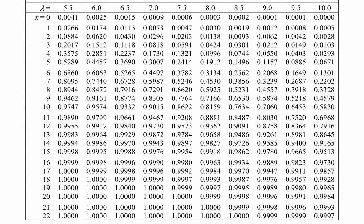We scan down the column headed by lambda equals 9 to find the probability as close as possible to 0.025. We reach 0.0212, which tells us that the probability of getting 3 or less is 0.0212. So if our test statistic turned out to be 3 we would reject the null hypothesis, and clearly values of 0, 1, or 2 give even smaller probabilities. This part of the critical region consists of the numbers 0, 1, 2, and 3.